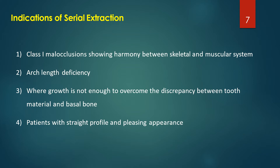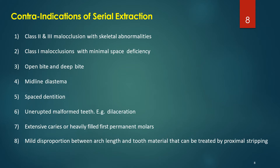Contraindications include Class 2 and Class 3 malocclusions with skeletal abnormalities; Class 1 malocclusions with minimum space deficiency treatable by other techniques; patients with open bite and deep bite; midline diastema; spaced dentition or generalized spacing; unerupted malformed teeth such as dilaceration; extensive caries or heavily restored first permanent molars; and mild arch length-tooth material disproportion treatable by procedures such as proximal stripping.